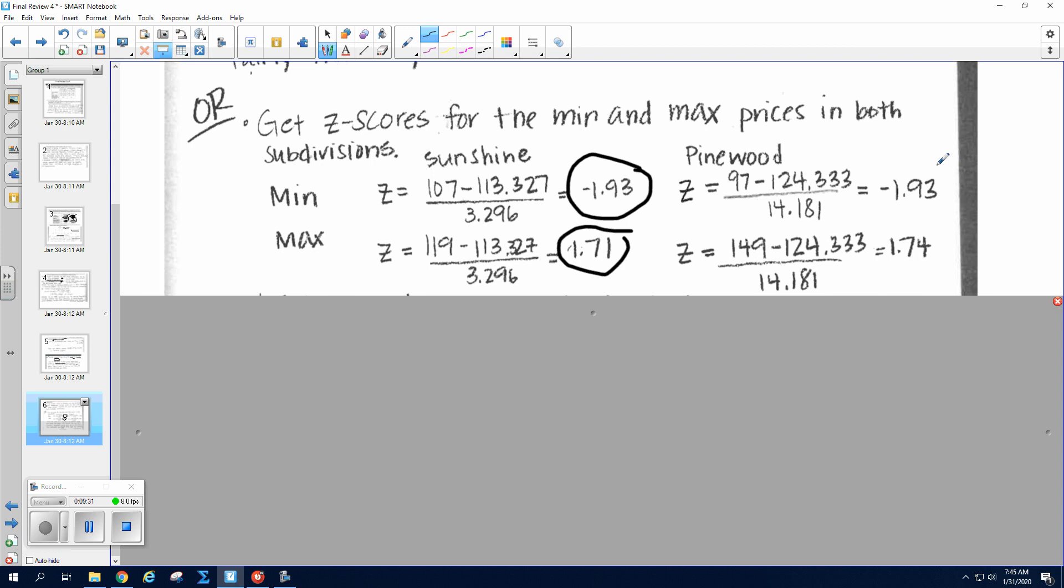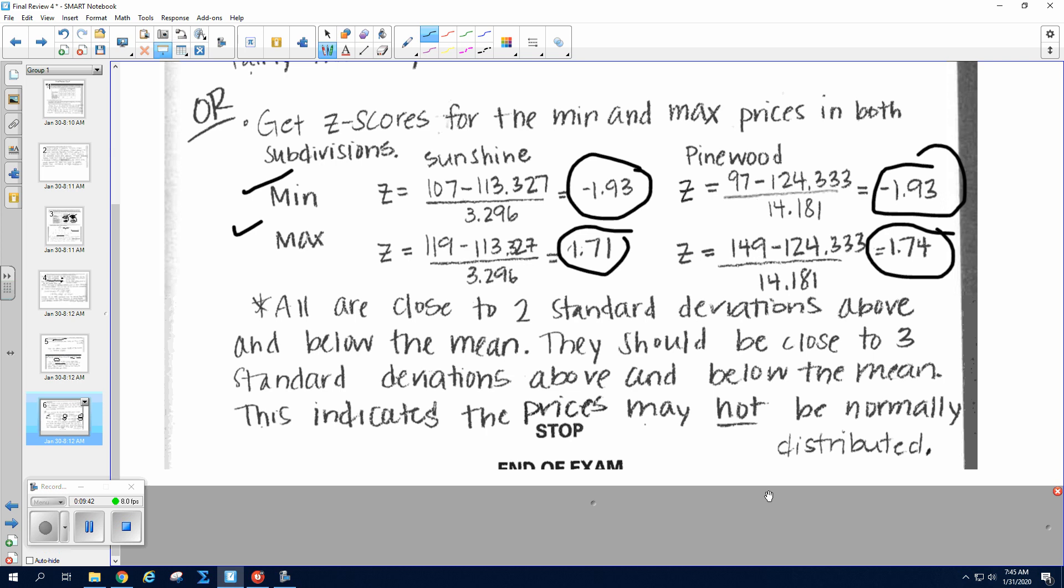What should the mins and the maxes be close to as far as the z-score goes? They should be close to three standard deviations above and below the mean. So this actually indicates the prices may not be normally distributed. So you can argue that one either way. It's up to you.